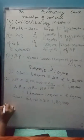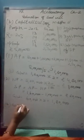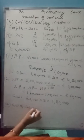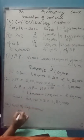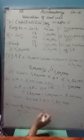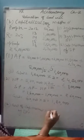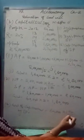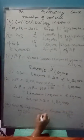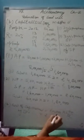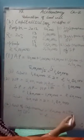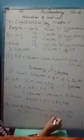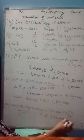Third requirement: goodwill by capitalization method through SP. Formula is SP into 100 upon rate = 60,000 into 100 upon 20 = 3 lakhs. So the three answers are: 4,80,000 by average profit purchase; 1,80,000 by 3 years purchase of SP; and 3,00,000 by capitalization method.